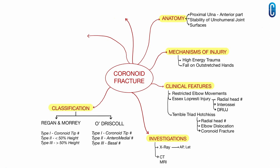Then we saw the Regan and Morrey classification of coronoid fractures: Type 1 is coronoid tip fracture, Type 2 is less than 50% coronoid height, and Type 3 is fracture involving more than 50% coronoid height. Then we have the O'Driscoll classification of coronoid fractures: Type 1 is coronoid tip fracture, Type 2 is anteromedial fracture, and Type 3 is basal fracture.